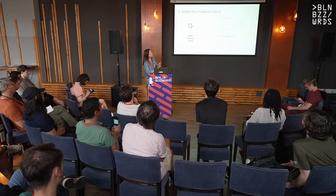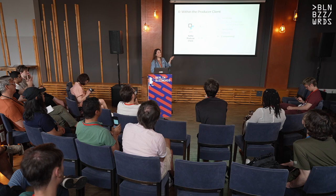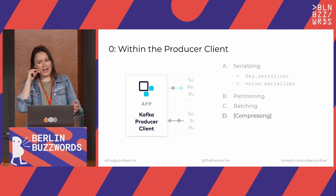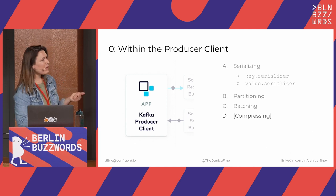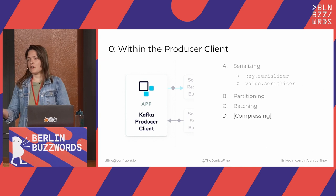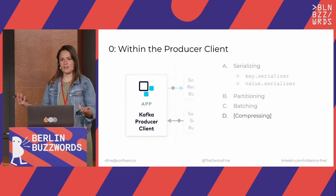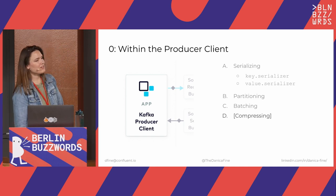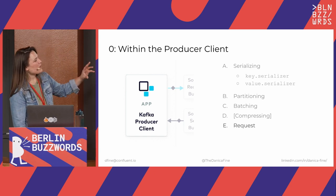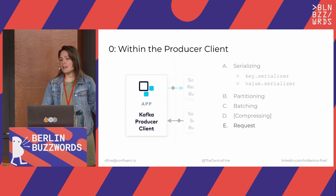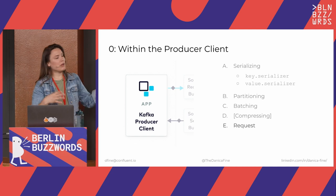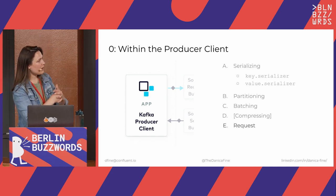Now we have serialized data, we've given it a partition, we've optionally batched it. Next is another optional step: we could compress that data. This is one of those processes on the producer that does take up a little bit more memory in addition to what's allocated by buffer.memory. By default, compression is disabled, but if you want to play around with it, it's controlled by the compression.type configuration parameter. We have a lot of compression options available out of the box — maybe use Zstandard as a starting point. The reason you might want to compress is because any chunk of data in a batch is going to be stored in the same spot together in sequence on disk.